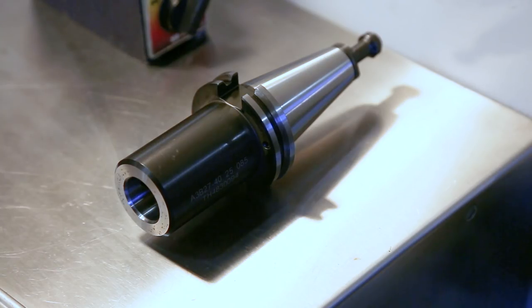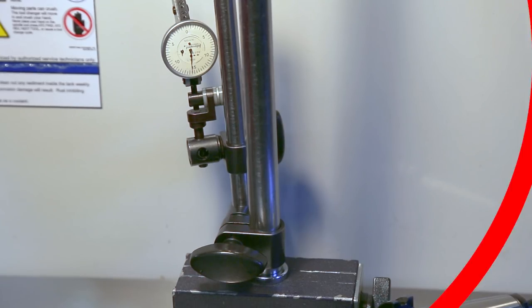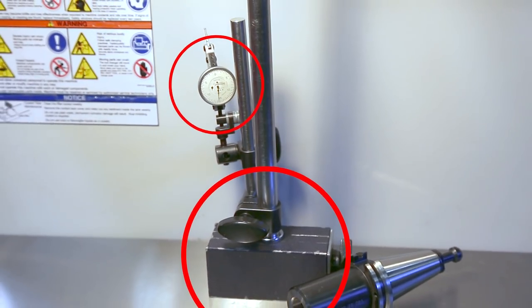Setting the tool change offset is not difficult. You'll need a blank tool holder with a flat bottom face, a 5 tenths indicator, and a mag base to do this job.